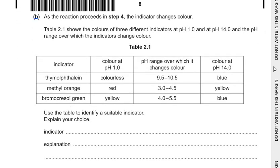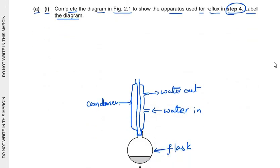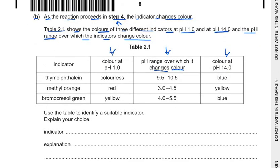So here the sub question B is as the reaction proceeds in step 4 the indicator changes color. Now table 2.1 shows the colors of 3 different indicators at pH 1 and pH 14 and the pH range over which the indicators change color. So here is the color at pH 1, color at pH 14 and the pH range in which the indicator changes color. Now if we check what is step 4 we can see that in step 4 the reaction mixture is heated for up to 30 minutes. It's written that we add KOH that is potassium hydroxide to this mixture then the indicator is added and then the boiling with reflux occurs and it shows that it changes the color during this reaction. Now use the table to identify a suitable indicator and explain your answer.